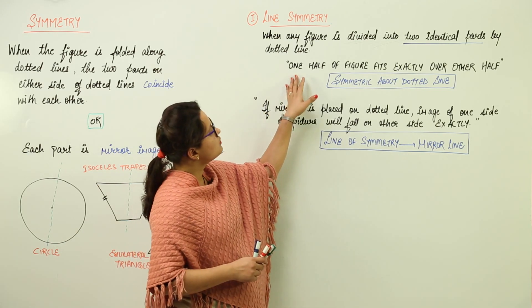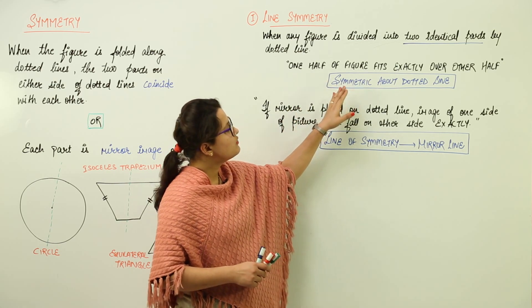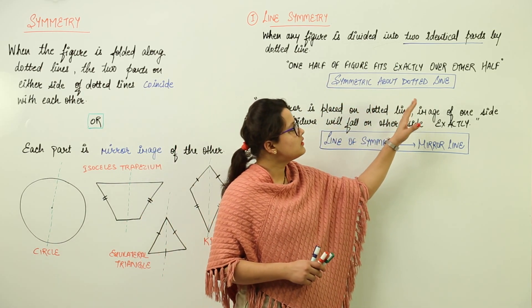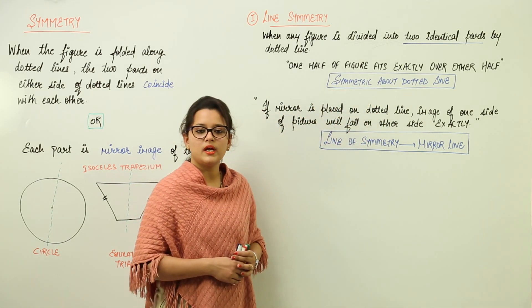If you want to conclude, you would have that one half of the figure fits exactly over other half. That means the figure is going to be symmetric about the dotted line.